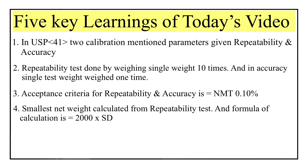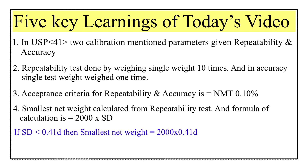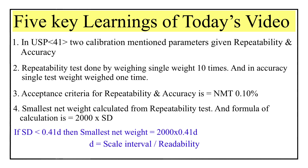Point four: smallest net weight is calculated from the repeatability test and the formula is smallest net weight = 2000 × standard deviation, where standard deviation is obtained from the repeatability test. If the standard deviation value is less than 0.41d, then the formula becomes 2000 × 0.41d, where d is called the scale interval or readability — this tells you the minimum value a balance can read.